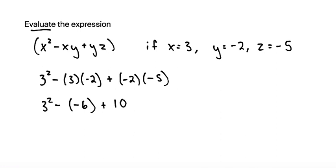From here, I can bring down my 3 squared again. A negative times a negative is a positive. So this would make plus 6 and then plus 10.